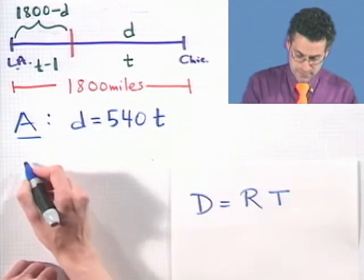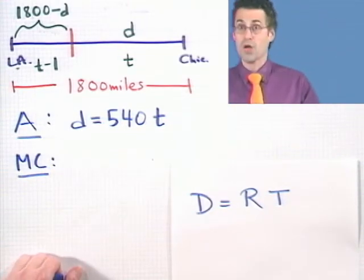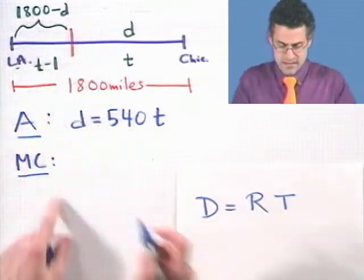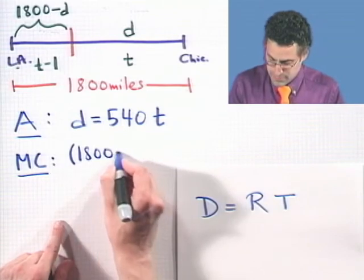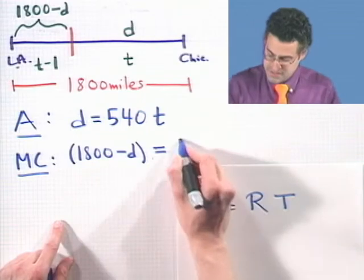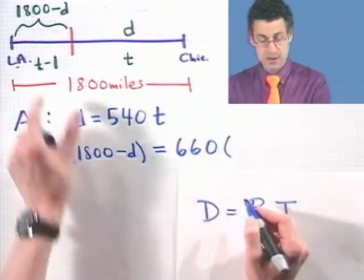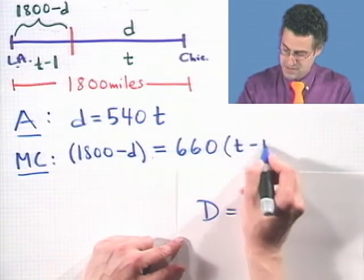Now, what about MC Plyer? Well, MC Plyer traveled a distance of this. So that's the quantity 1,800 minus D. And that's going to equal his constant speed, which was 660 miles per hour, times his time. Now, his time wasn't T. Remember, he started an hour later. So his time was T minus 1.